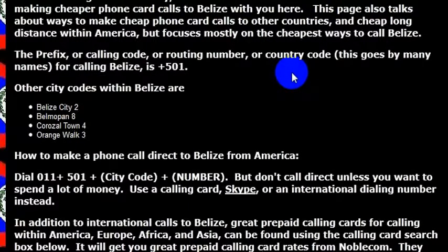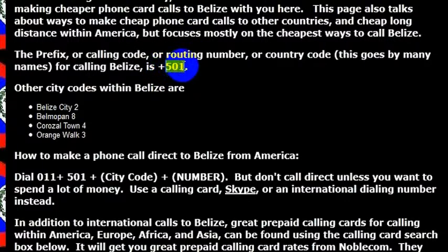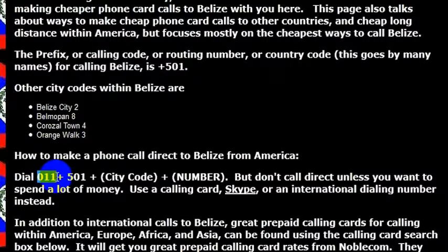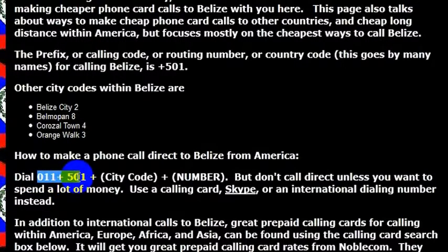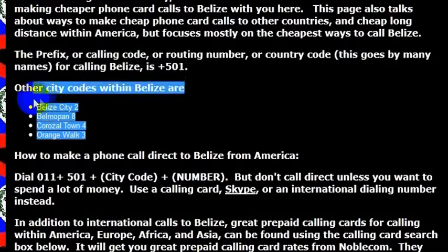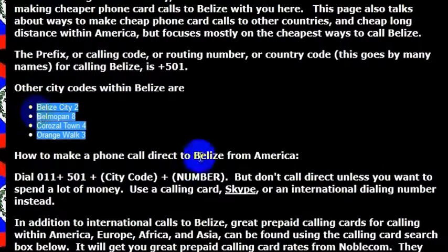But if I want to make a phone call to Belize to arrange any travel in advance or anything like that, the country code for Belize is 501. So if I wanted to make a phone call directly to Belize, I would dial 011 — as long as I was calling from a phone enabled for international calling — then 011 plus 501, which is the country code for Belize, and then the city code and then the number.